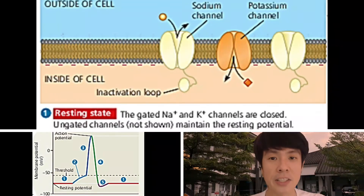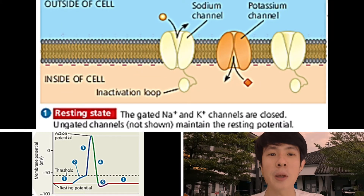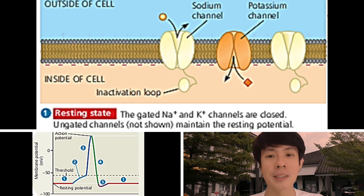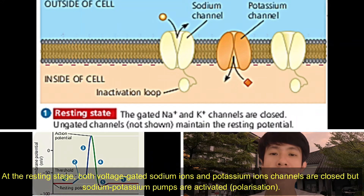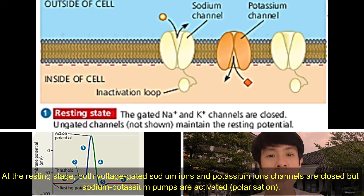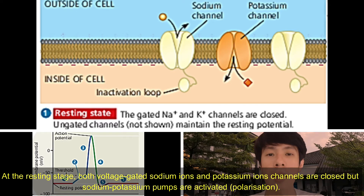At the resting stage, both voltage-gated sodium ion and potassium ion channels are closed, but sodium-potassium pumps are activated. Polarisation occurs: 3 sodium ions are actively pumped out, while 2 potassium ions are actively pumped in.